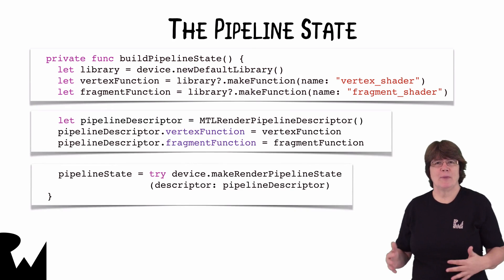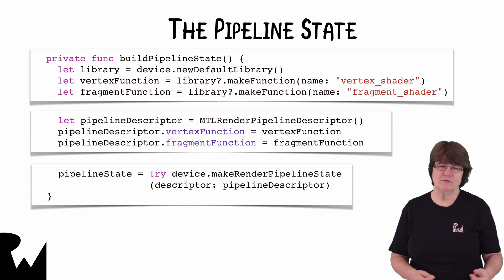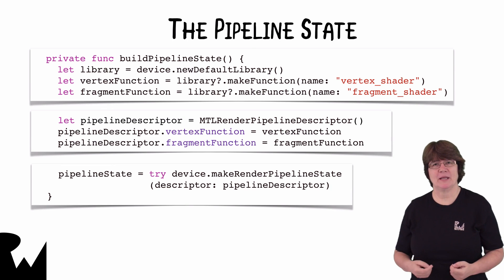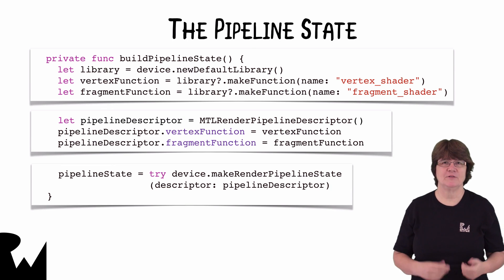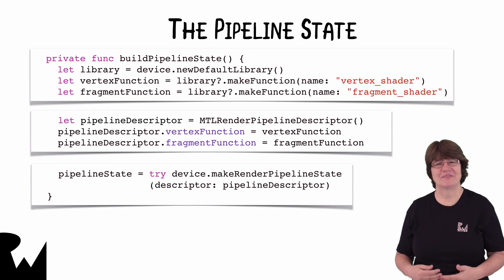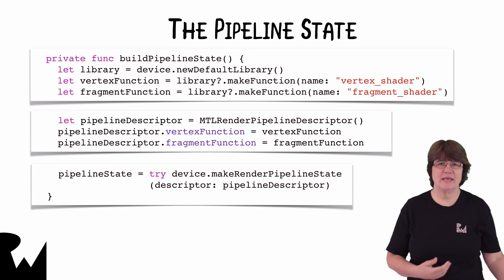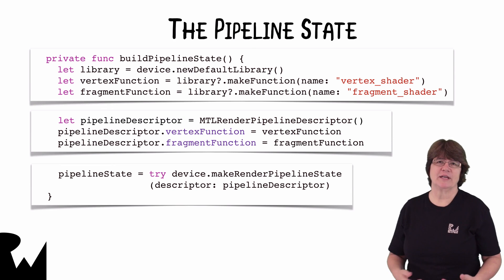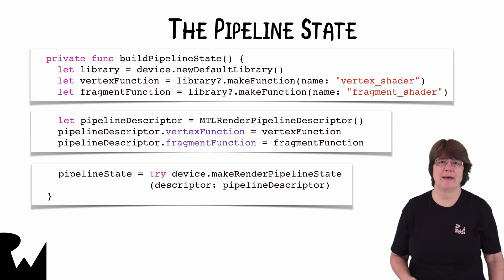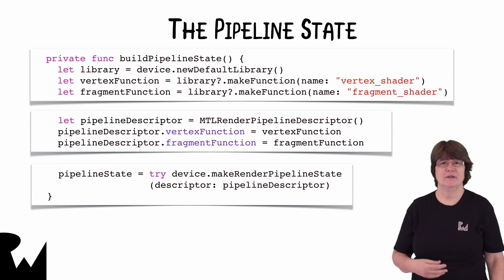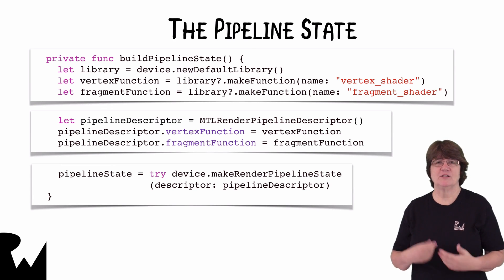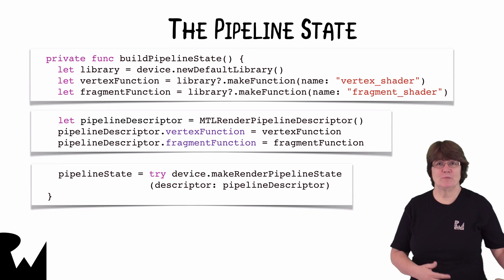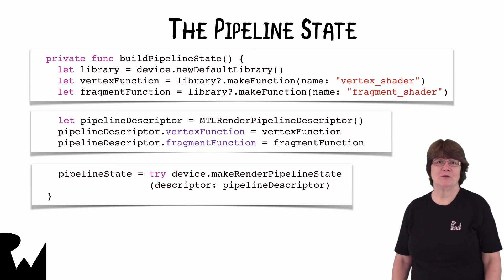So unlike OpenGL, all our shader functions are compiled before the app even opens. We then give the pipeline descriptor the vertex and fragment functions to use and create the pipeline state from that pipeline descriptor. This all happens at the beginning of the app. It's very important to set up the pipeline states before the app gets into the game loop. Creating a pipeline state is an expensive operation and you don't want to be creating these while your game loop is running.